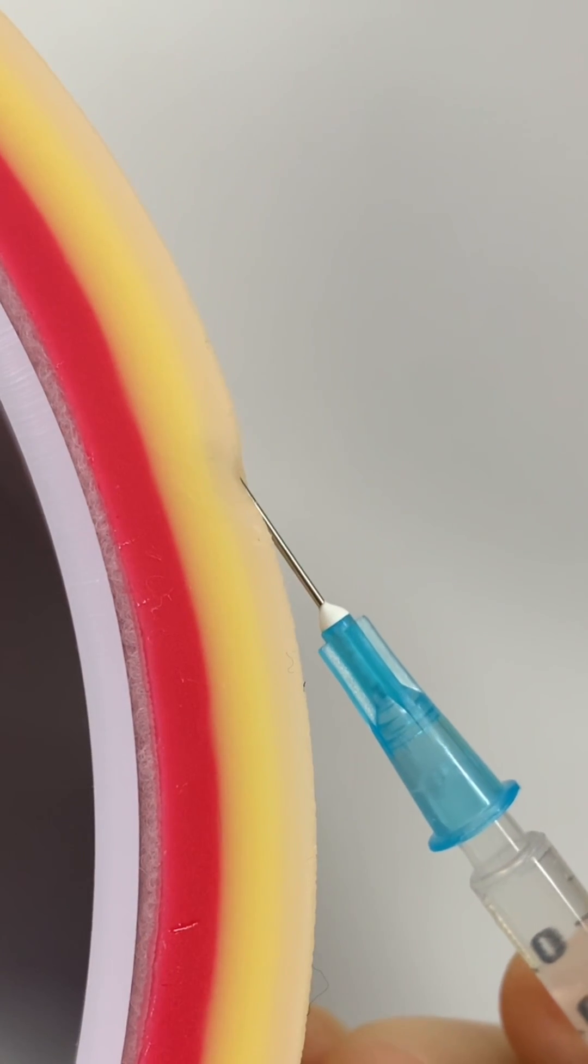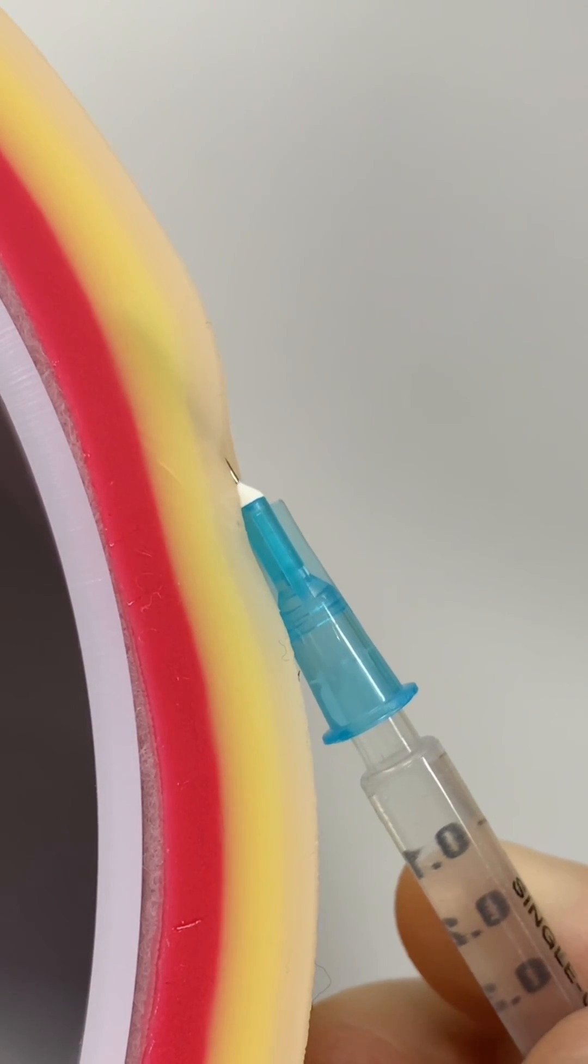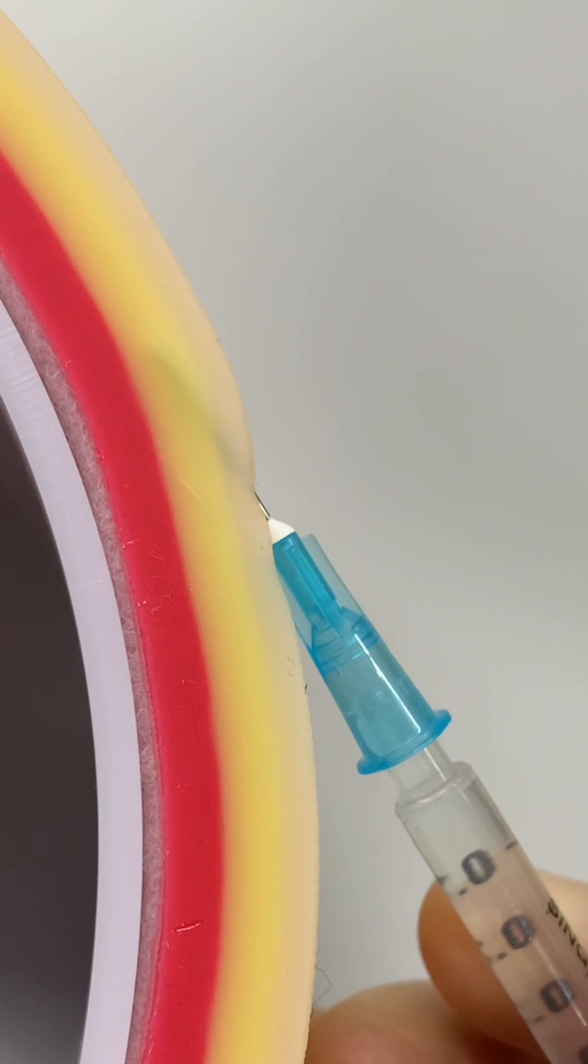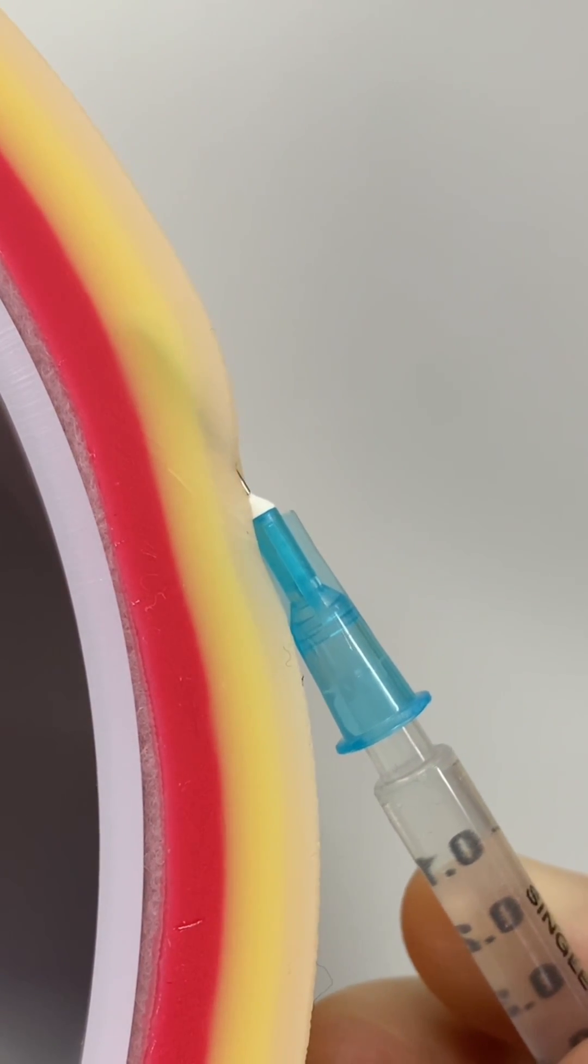Subcutaneous injections are made at a 45 degree angle to go into the deepest layer of the skin. This layer mostly consists of fat, which doesn't have a great blood supply, so these injections work more slowly but for a longer period of time, as the medication slowly seeps into the bloodstream.